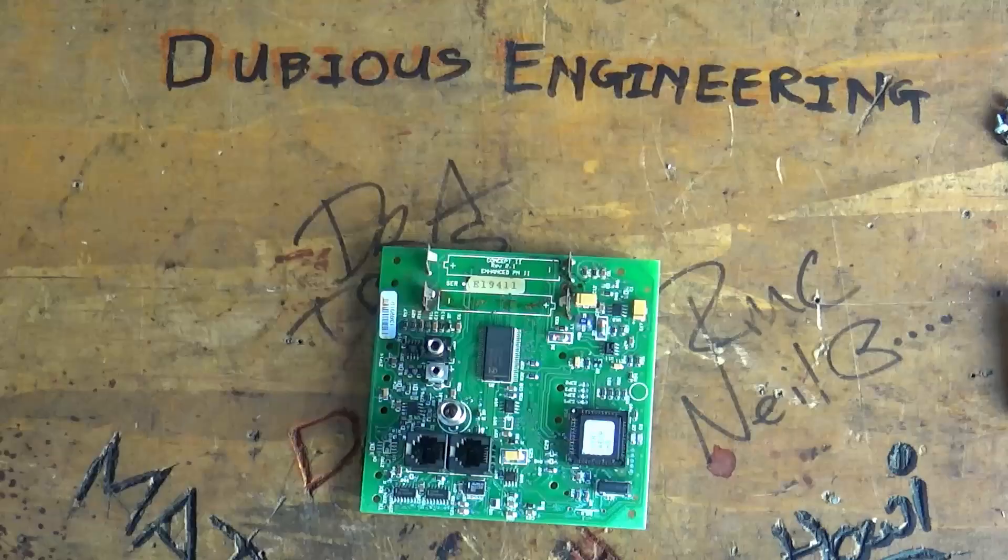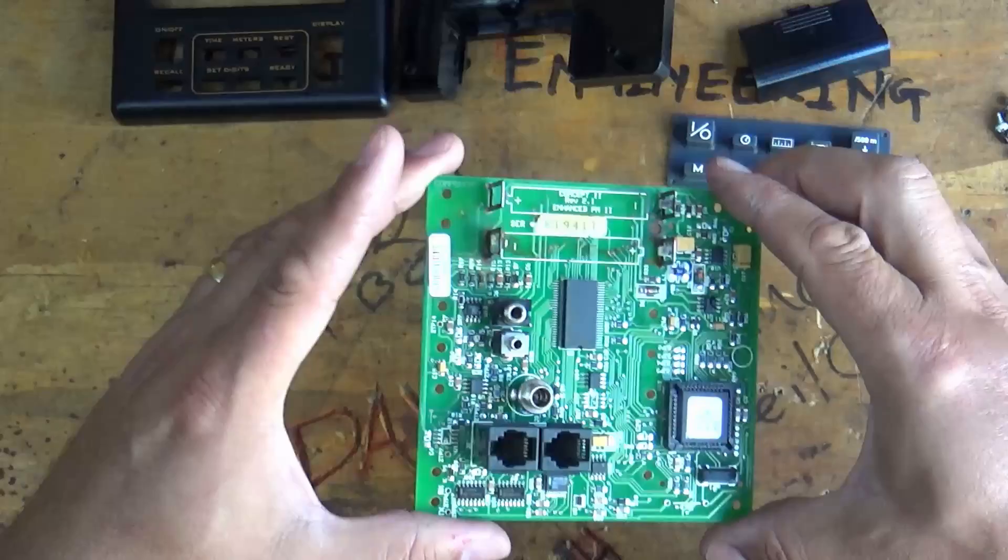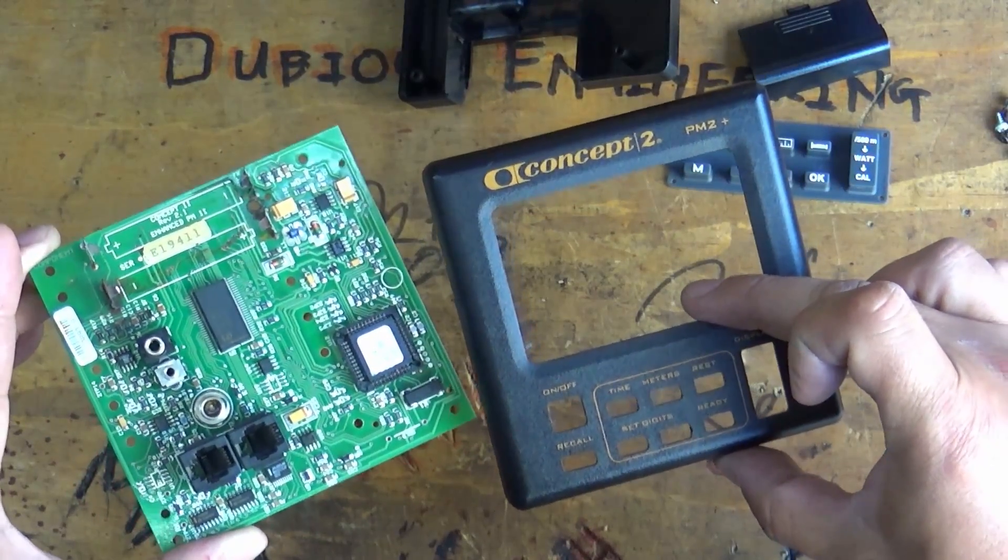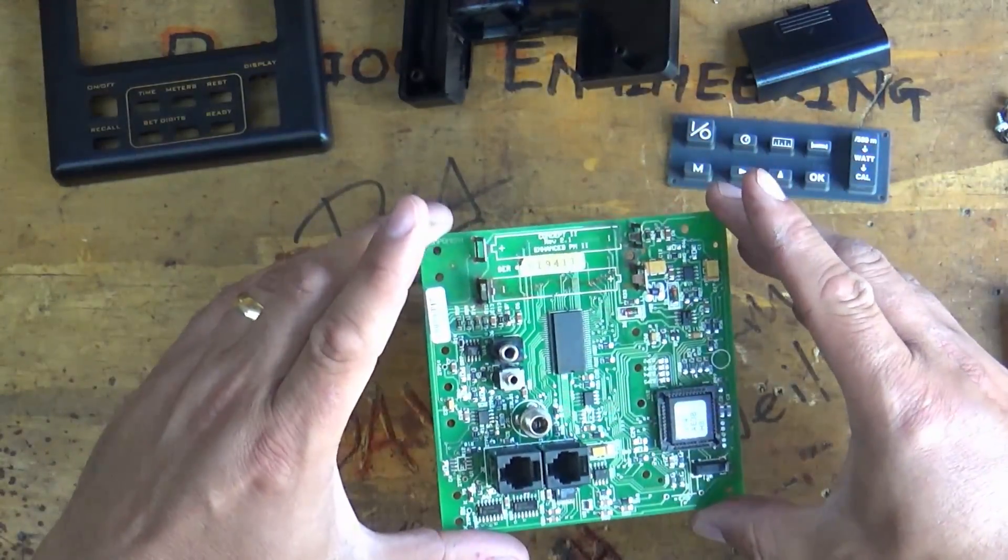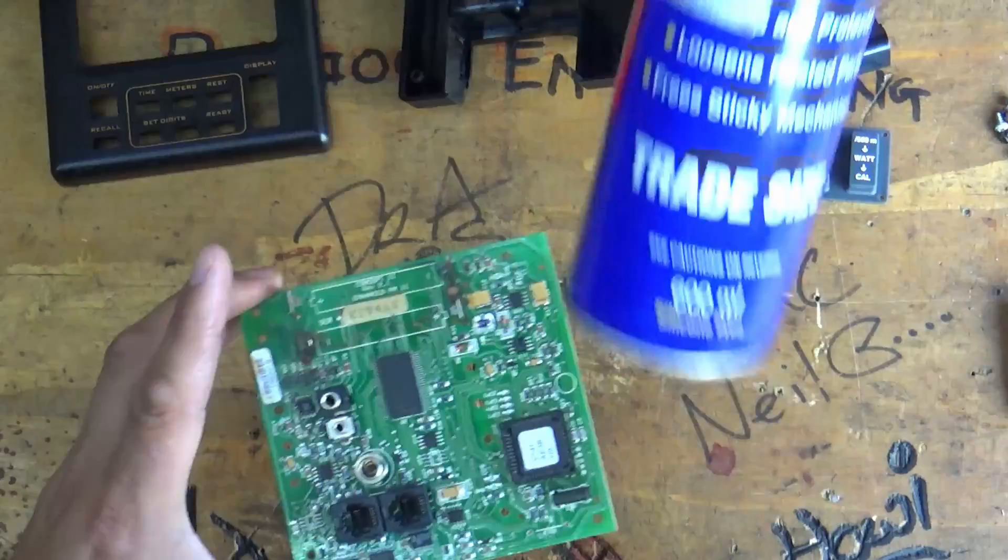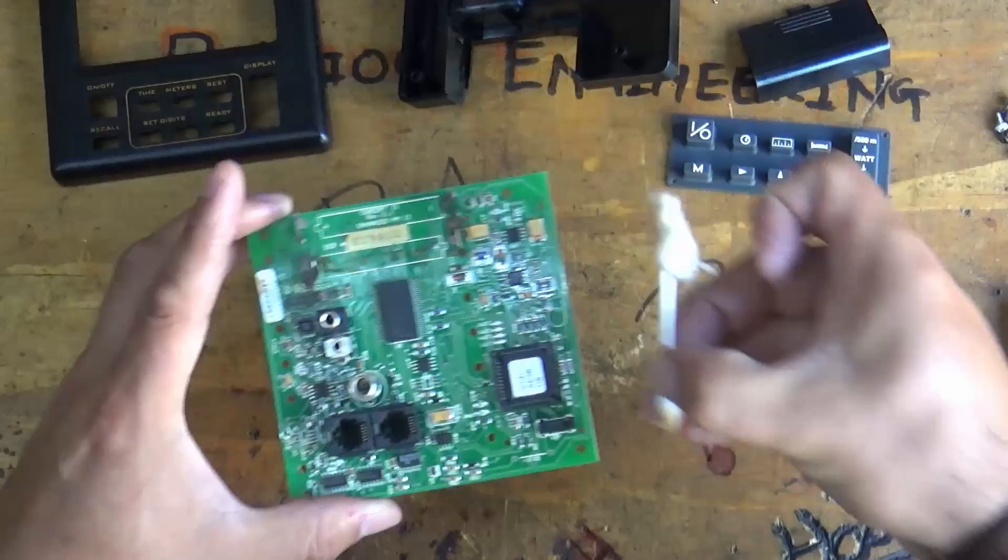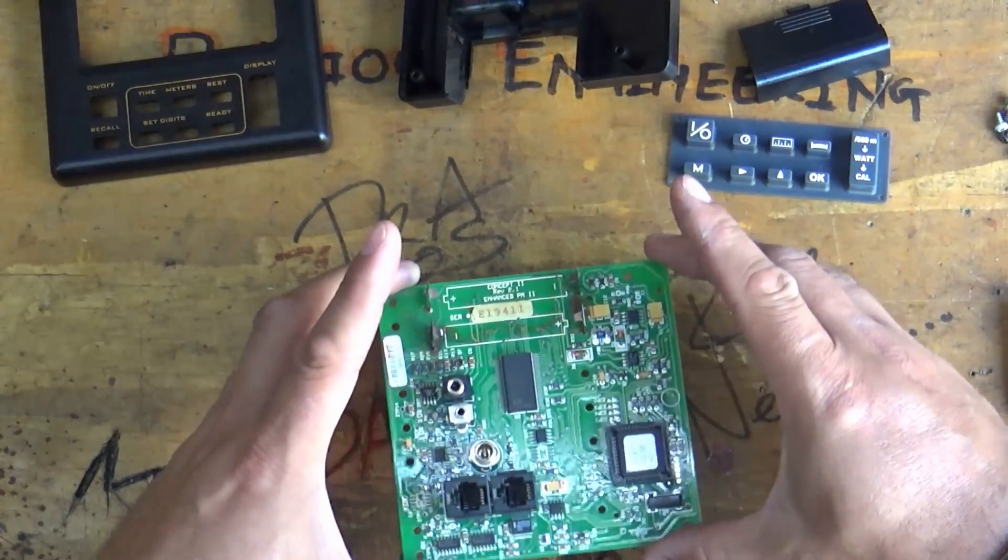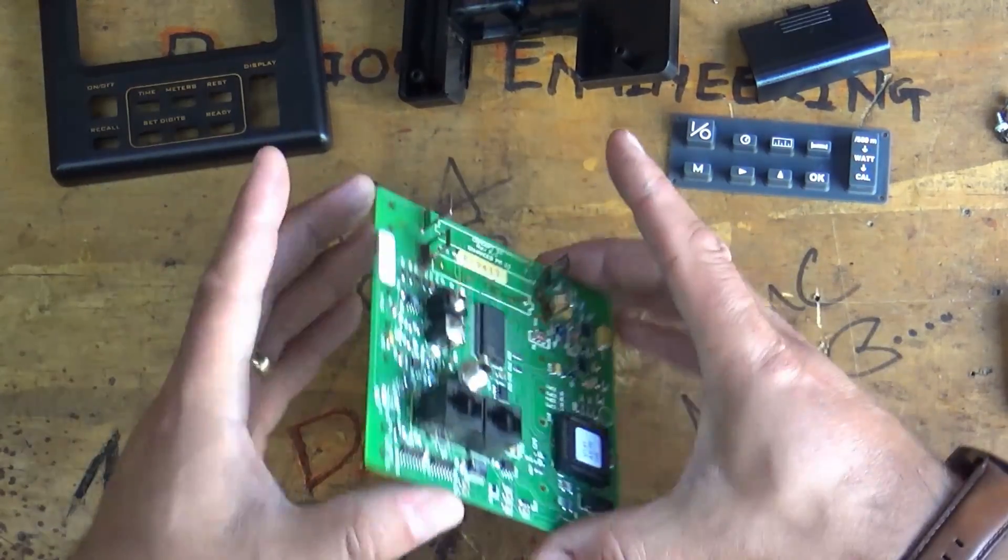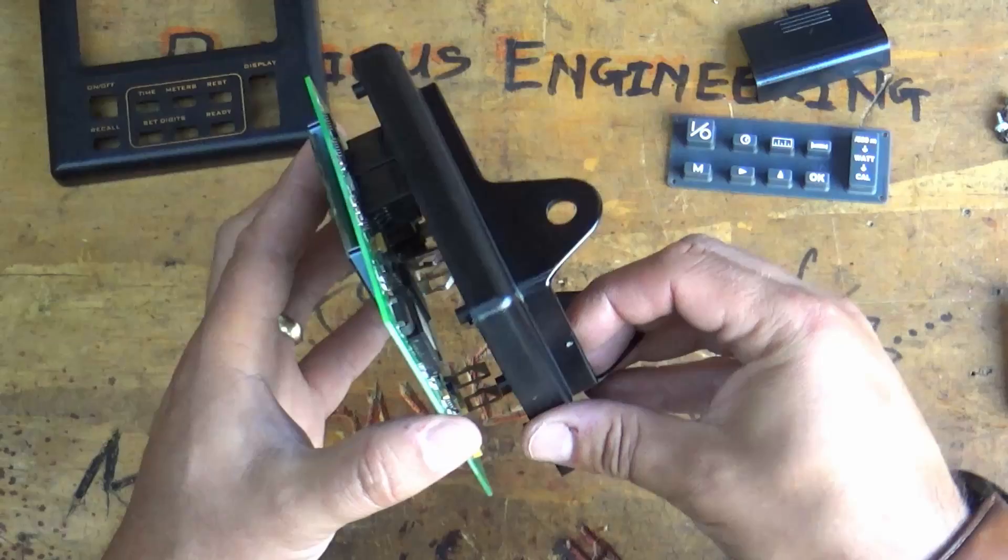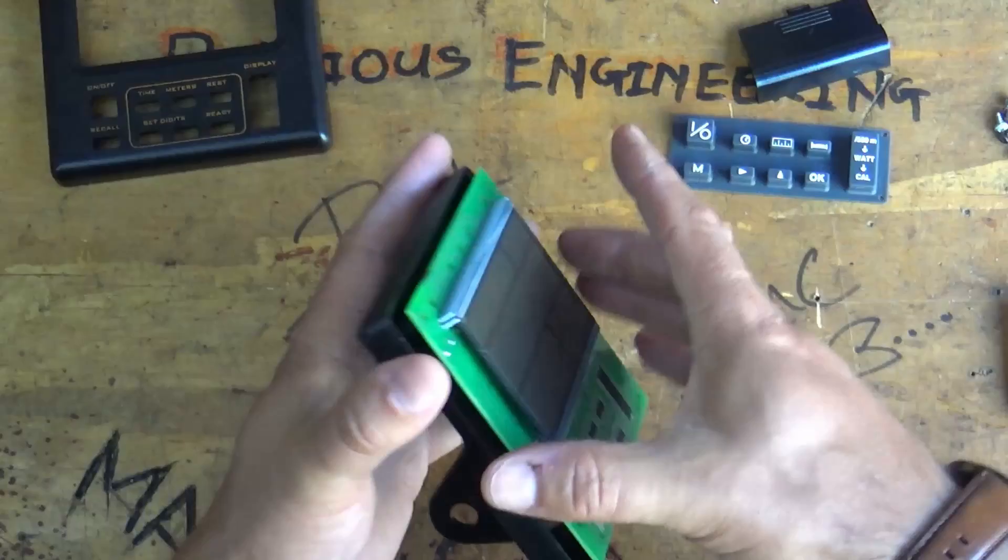So there it is ladies and gents top tip this was a broken Concept2 rowing machine computer but great news thanks to a little WD-40 and methylated spirits some cotton wool buds a soldering iron a multimeter a screwdriver we've been able to repair this and get it all up and running again which is going to make my neighbor very happy because these are 120 pounds to buy.